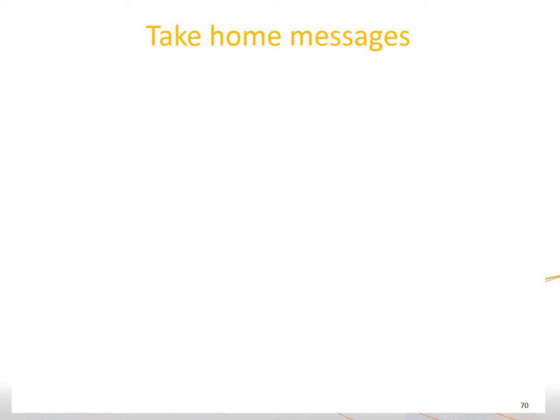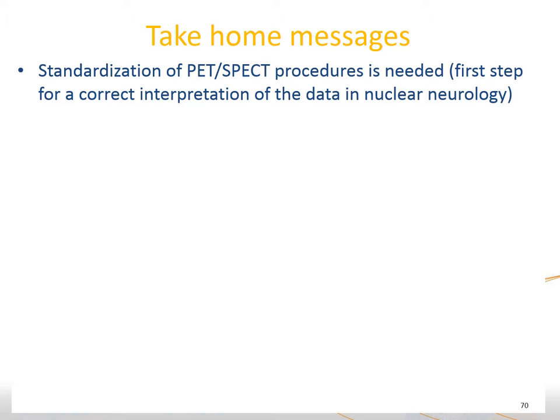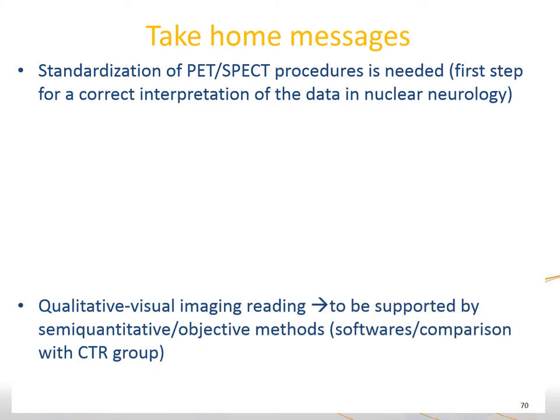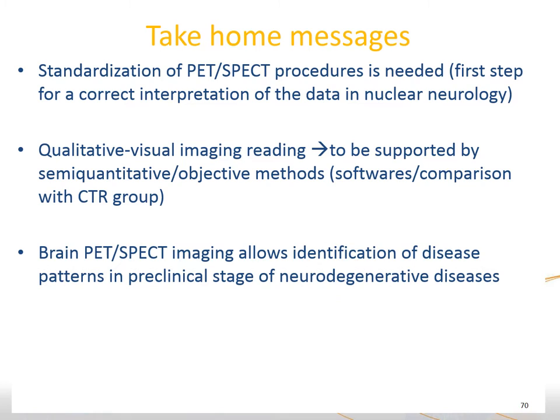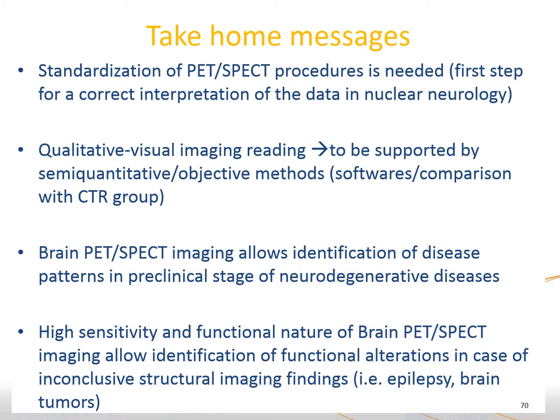Take-home messages: first, standardization of imaging procedures is the first step for correct interpretation in nuclear neurology. Second, qualitative visual reading should be supported by semi-quantitative objective methods including software and comparison with control databases. Third, brain PET and SPECT imaging allows identification of disease patterns even in the preclinical stage of neurodegenerative diseases. Fourth, the high sensitivity and functional nature of brain PET and SPECT imaging allows identification of functional alterations when structural imaging findings are inconclusive, such as in epilepsy or brain tumors. Thank you.